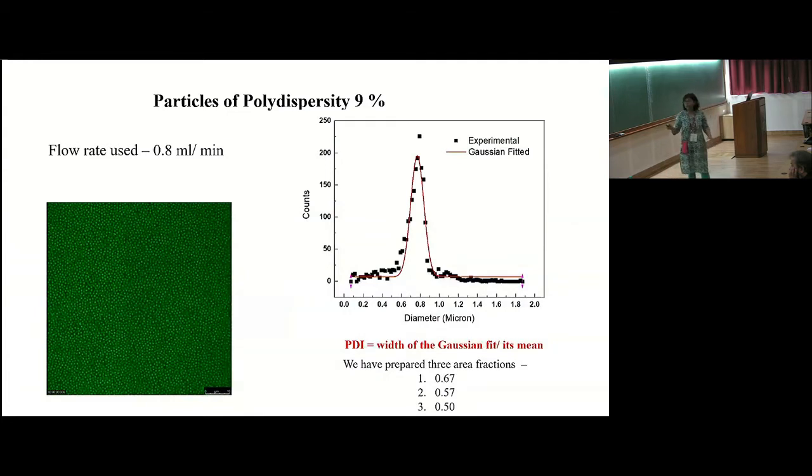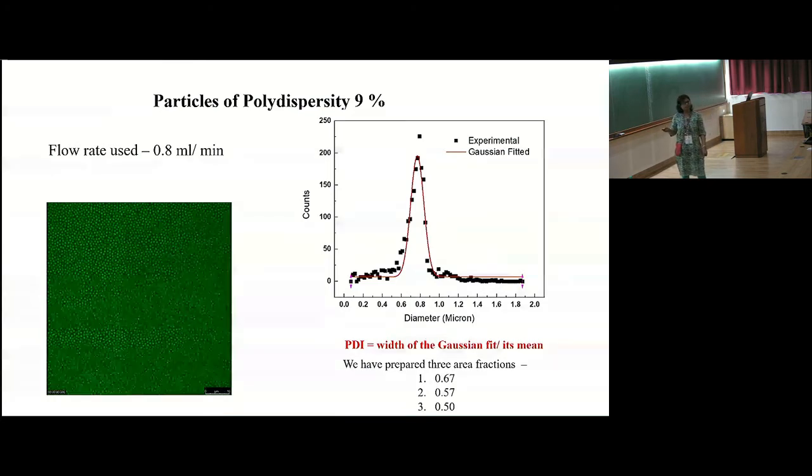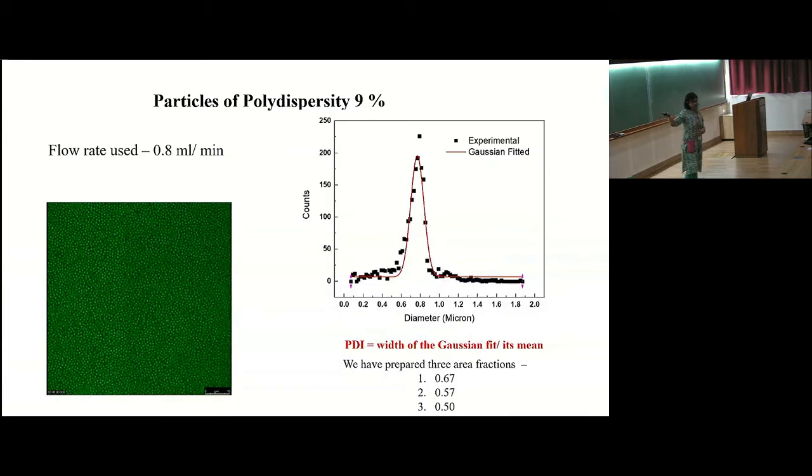So, just by counting particles, the first thing we do with images such as this is we have to grayscale the images. And there are two things that we can calculate. One is the center of motion of every particle in this frame, which is about a thousand particles. And also, we can calculate the area fraction of the particles here. And having done that, we can also measure the sizes of the particles. And that's what you see here. So, you can see that the average diameter here is about 800 nanometers or so. And the width basically helps us define a polydispersity index. Of course, we force-fitted it to a Gaussian. I completely agree that this is not a Gaussian. But just to define the PDI, we define the polydispersity index as the width of the Gaussian fit divided by the mean.